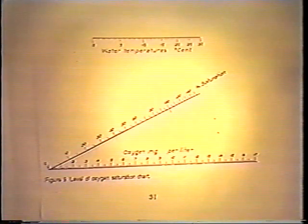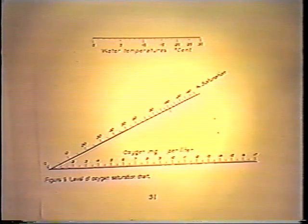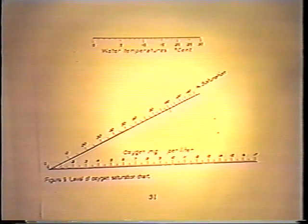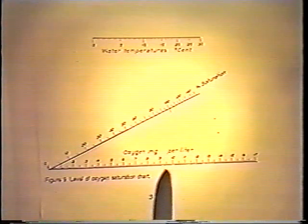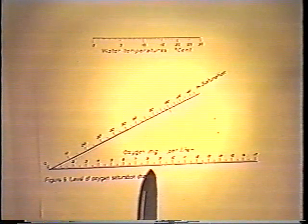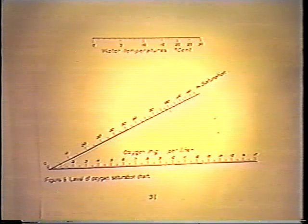We now have our adjusted figure of 8.82 milligrams per liter, and we're going to take that and calculate our percent saturation. Just a warning: when you work with these charts in the manual, you have to be very precise because the precision of the chart is somewhat limited. If I make a very small error, it's going to have large consequences, so please make sure you're as precise as you can be.